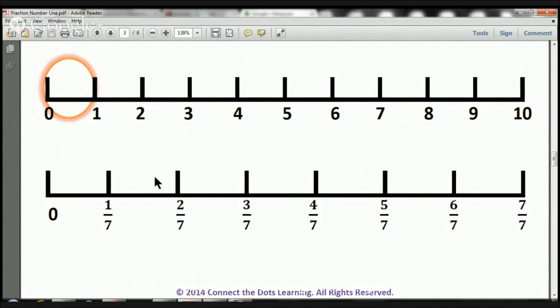Here we have 1, 2, 3, 4, 5, 6, 7 pieces. Take notice of the numerators up here and take notice of the denominators down here. We've got 7 pieces above.